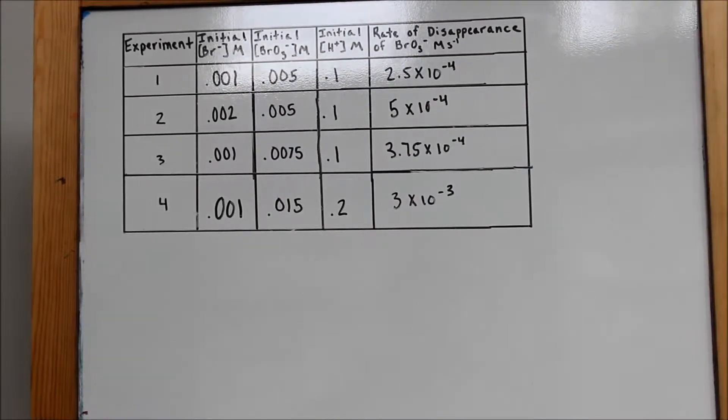We will be solving the 2003 College Board AP Chemistry free response question number 3, parts A through C. In order to compare the concentrations of each reactant and their effect on the rate, we will use experimental data given in this chart.